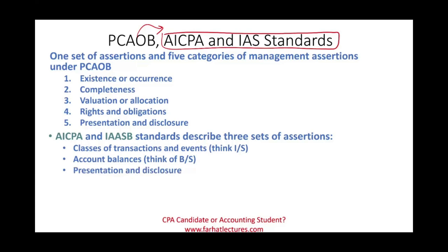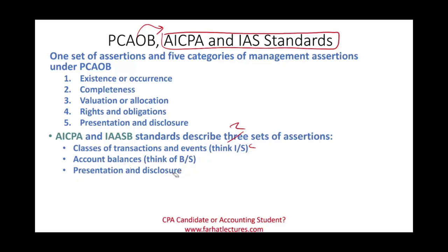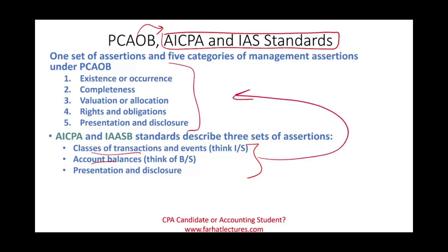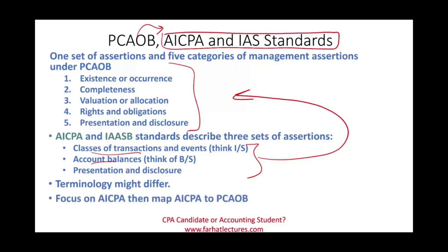In your textbook or CPA review course, they might say you only have two sets of assertions. What they do is take presentation and disclosure — since it applies to both classes of transactions and account balances — and merge it. Two or three, it doesn't really matter; the concept is the same. At the end of the recording, I will map the AICPA to the PCAOB so you can see what we're talking about once all is said and done.